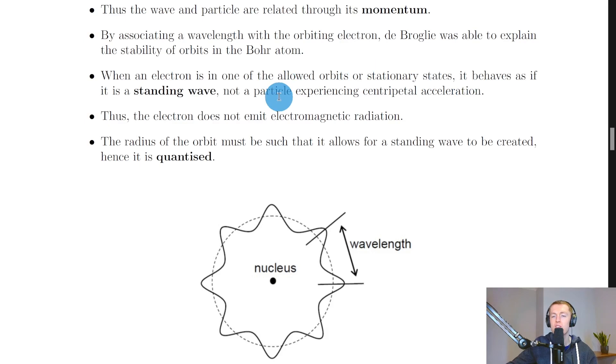So instead of thinking about the electrons as experiencing a centripetal acceleration, which would cause them to spiral in towards the nucleus of an atom, we can consider an electron to behave like a standing wave instead, rather than a particle. And thus the electron does not emit electromagnetic radiation. The radius of the orbit must be such that it allows for a standing wave to be created, hence it is quantised.